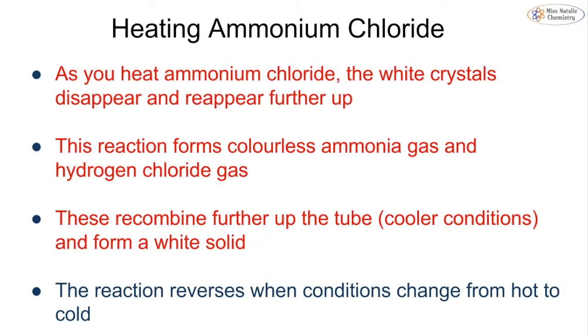Another one that you'll have met previously back in topic 1A and topic 1B, which is to do with diffusion, is ammonium chloride. If you heat ammonium chloride, which is a white solid, what will happen is the white crystals will disappear and then they will reappear further up your test tube. Rather than the white crystals being at the bottom, as the reaction proceeds, you will start to see the white crystals forming near the top of the test tube.